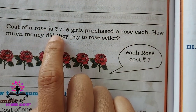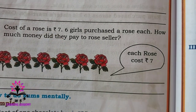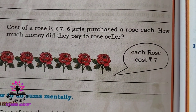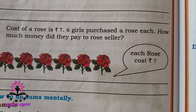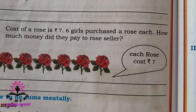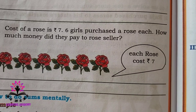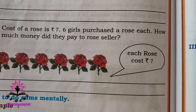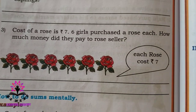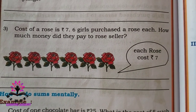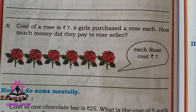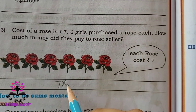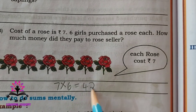The cost of a rose is Rs. 7. Six girls purchased a rose each. How much money did they pay to the seller? One rose costs Rs. 7, and 6 girls each purchase one rose, so we multiply. 7 times 6 is 42. It is direct multiplication — 7 sixes are 42.